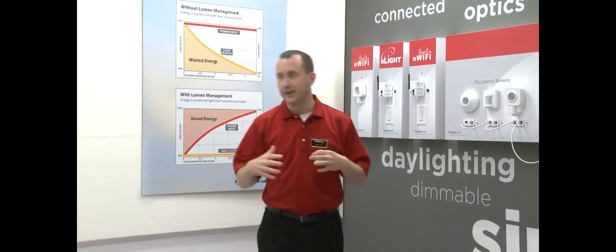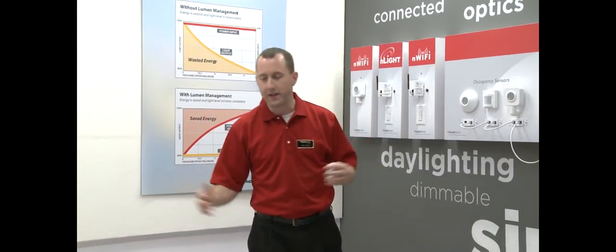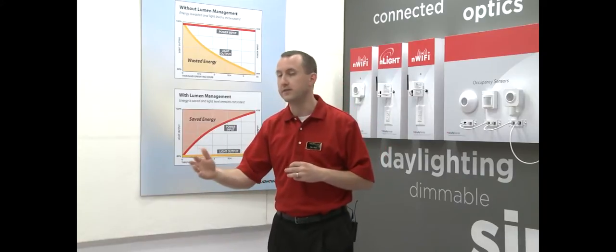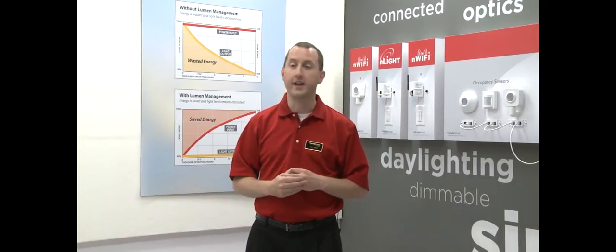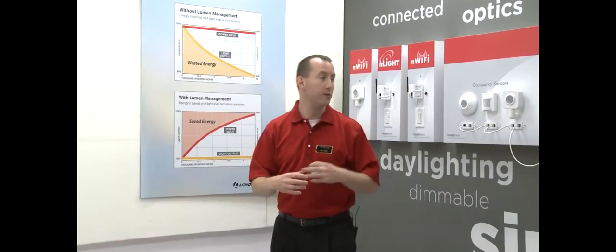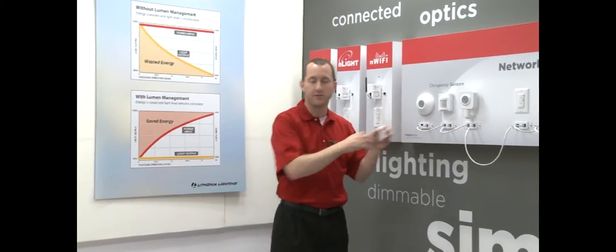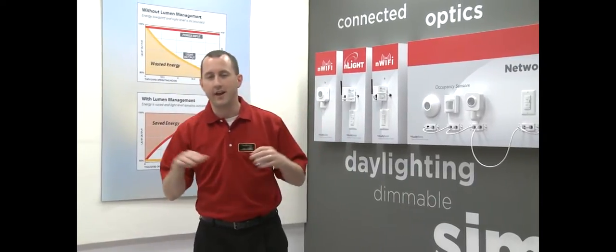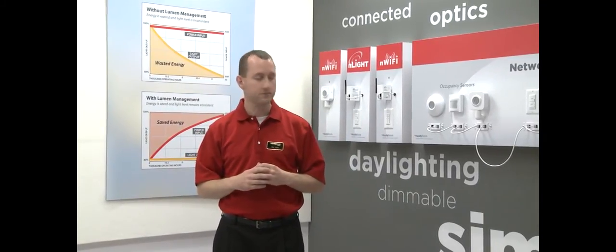Typically in a large space, there's going to be some LEDs, some fluorescents, possibly even incandescents. Nlight can switch and dim all these different sources, and they do it using all the same type of occupancy sensors and switches. So to the end user, Nlight is a very simple system.